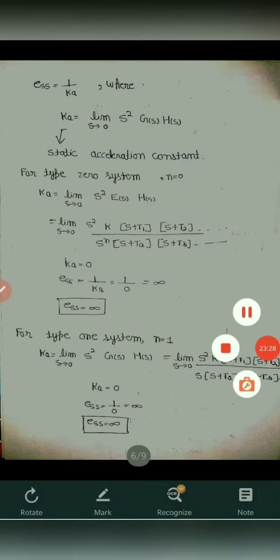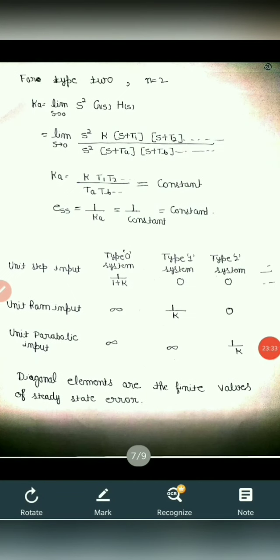For type 2 system, N equals 2. Ka equals limit S tends to 0, S square into GS into HS. After calculating, the value of Ka equals a constant value.